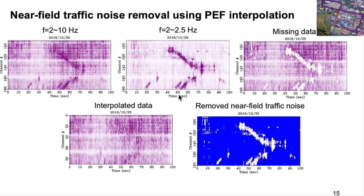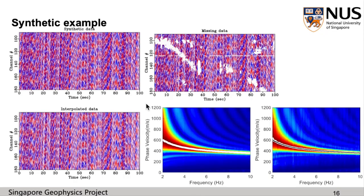So here are the results. This is the 100-second DAS data after being applied a 2 to 10 Hz bandpass filter, and this one after a 2 to 2.5 Hz bandpass filter. You can see the near-field traffic noise has a very clear appearance on the data, and the envelope of the near-field traffic noise is much bigger than that of the rest, so it can be detected very easily. This is the data after muting the near-field traffic noise, and this is the data after interpolation — it looks quite clean. This one is the removed near-field traffic noise. Since the missing data are interpolated using nearby data, we need to make sure the interpolated data has no influence on the dispersion curve. The sensitivity test shows the two dispersion curves match fairly well.